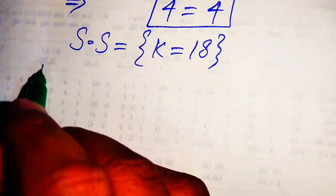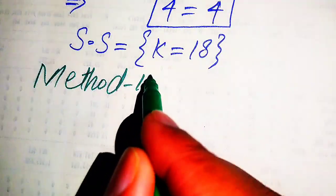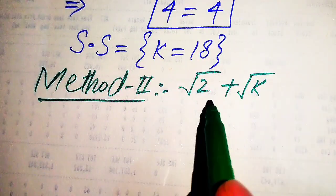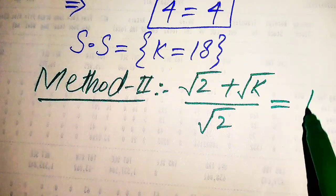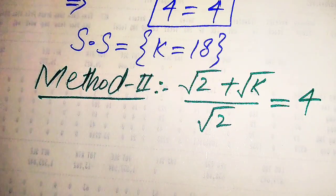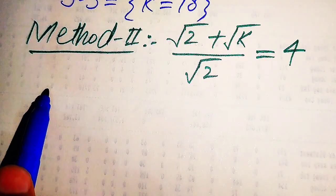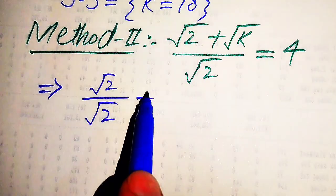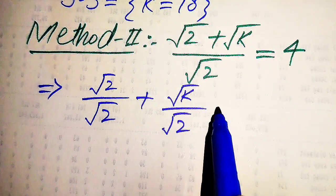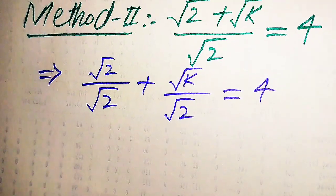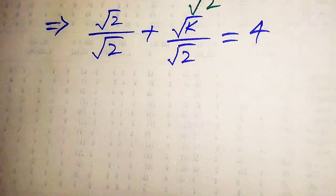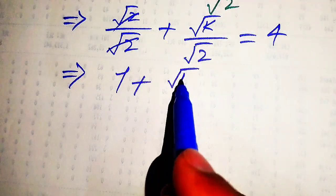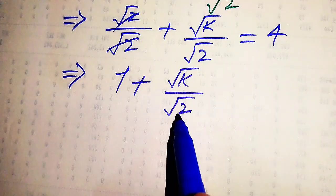Now we solve this problem using the second method. The given equation is square root of 2 plus square root of k, divided by square root of 2, equals 4. In the second method, we quickly find the values of k by breaking this fraction. When we break the fraction it becomes square root of 2 divided by square root of 2, plus square root of k divided by square root of 2, equals 4. The square root of 2 over square root of 2 cancels to give 1, plus square root of k divided by square root of 2, equals 4.